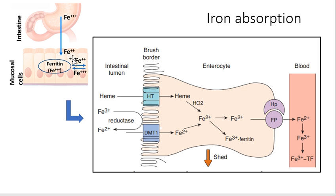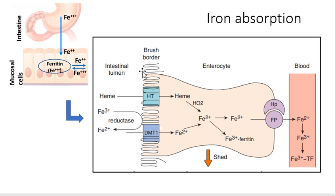So iron is converted from ferric (Fe³⁺) to ferrous (Fe²⁺) form in the stomach. Throughout the epithelium there are transporters available which facilitate transport of this ferrous form into the epithelial cells. From the epithelium it is absorbed into the bloodstream, and from the bloodstream it goes to various tissues.